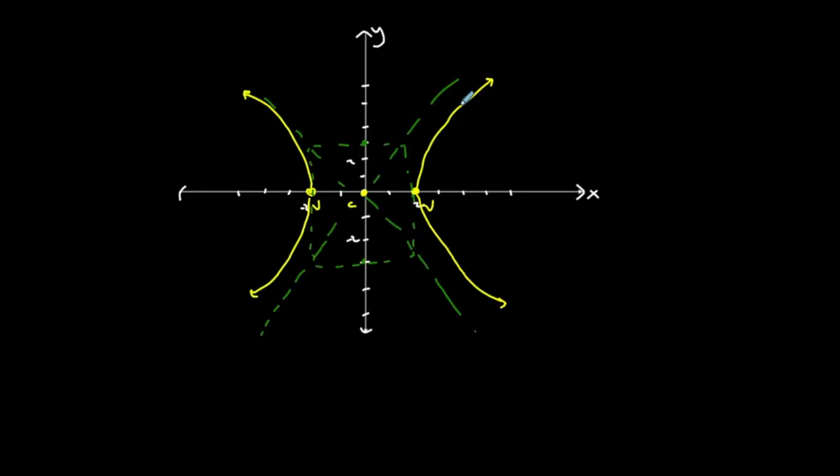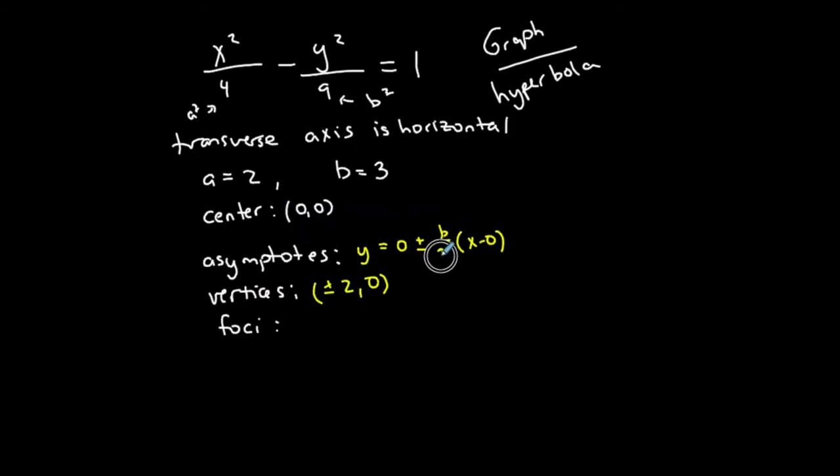So is it b over a or a over b here? Well, to get this line, I'm going to go from the center and go up b and over a. Up b and over a. So the equation of the asymptote is b over a.